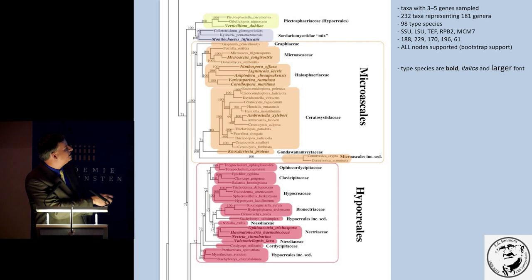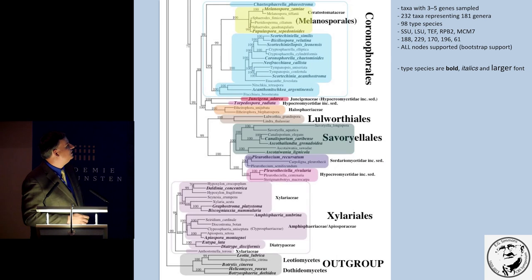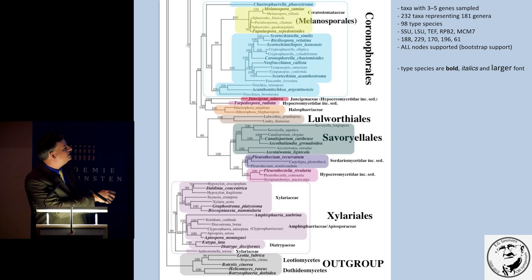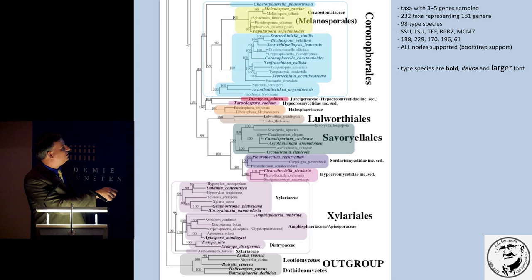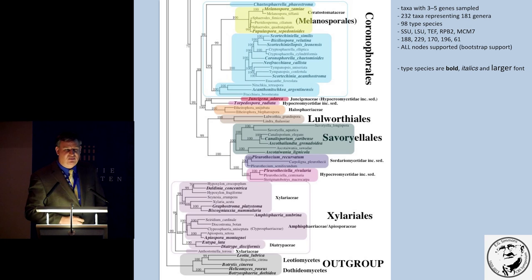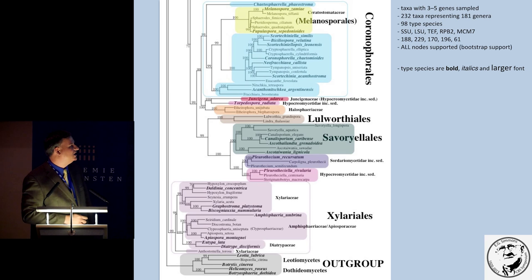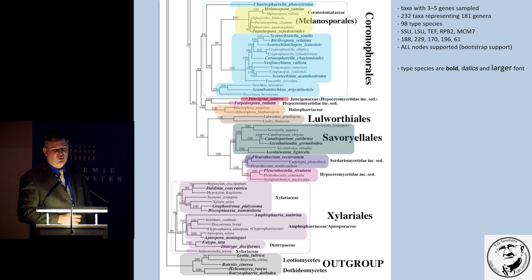The Microascales comes out as a nice, well-supported monophyletic group, and all the Hypocreales as well. At the base of the tree, we see the Coronophorales similarly to before, along with some nomenclatural issues to clean up regarding Halosphaeraceae. Lulworthiales and Savoryellales come out together. And the Xylariales comes out as a nice, well-supported monophyletic group at the base of the tree, which should make everyone happy.